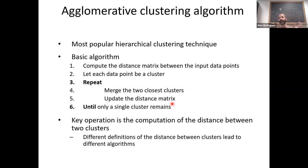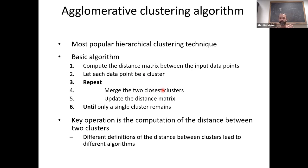The basic algorithm computes the distance matrix between all input data points and assumes each point is a cluster. Then iteratively you merge the two closest clusters and update the distance matrix. Updating the distance matrix means computing the distance between clusters — not just between data points — and this key operation is what differentiates the many agglomerative clustering algorithms.